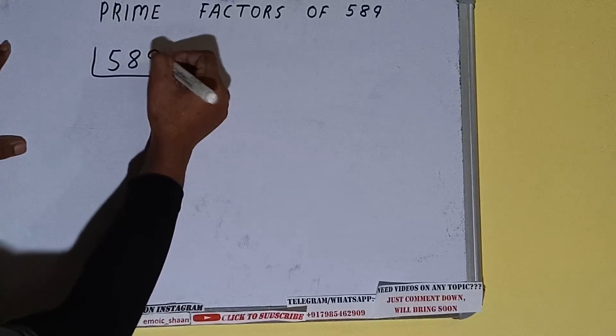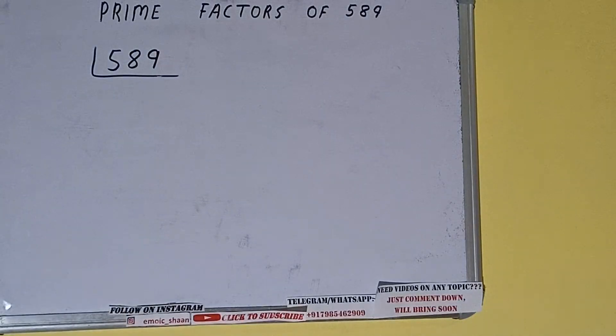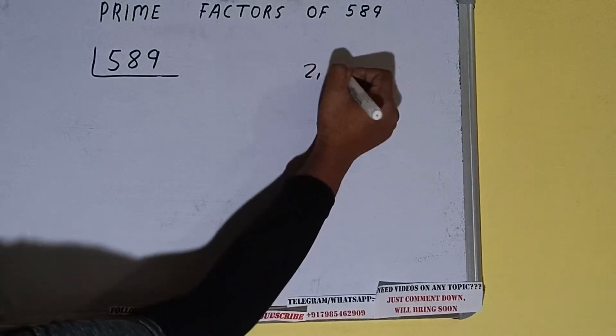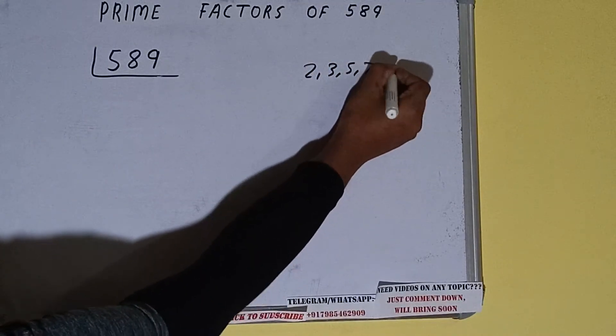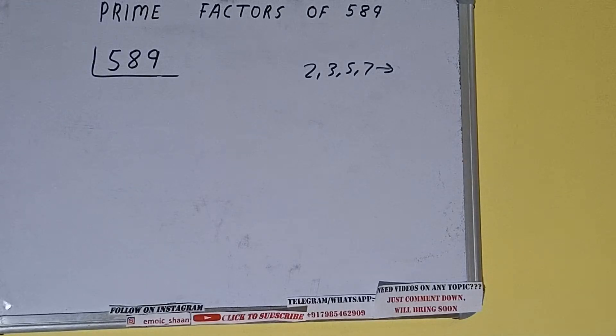The next thing we need to know about is what are prime numbers. Prime numbers are numbers that are divisible by one and the number itself, like 2, 3, 5, 7, and so on. All right, so we'll be checking with the lowest prime number we have.